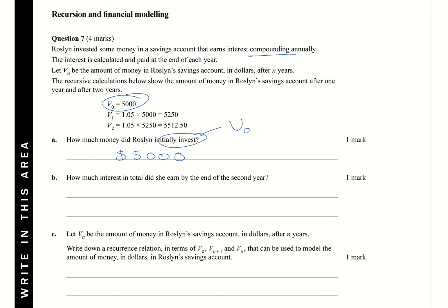So how much interest in total did she earn by the end of the second year? Her interest was after V2. So basically looking for the difference between V2 and V0. So after V2, it was $5,512.50, that's that V there, minus $5,000, because that's what V0 was. And that gives you an answer of $512.50.